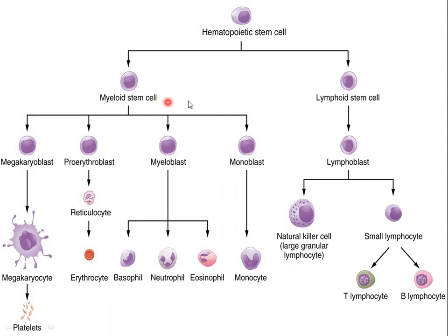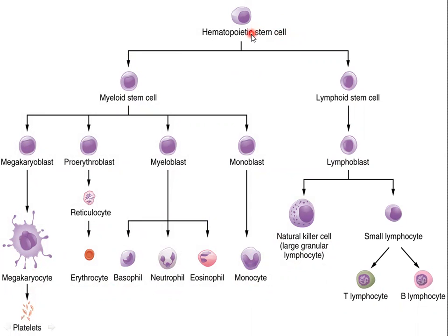In the hematopoietic lineage, we have the hematopoietic stem cell which gives rise to the myeloid stem cell and lymphoid stem cell. From these, we get the megakaryoblast, proerythroblast, myeloblast, and monoblast. These further differentiate into megakaryocytes, reticulocytes, and then into platelets, erythrocytes, basophils, neutrophils, eosinophils, monocytes, natural killer cells, and B lymphocytes.